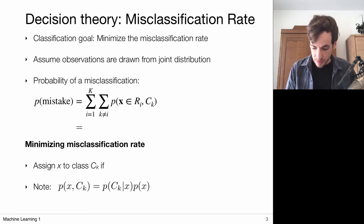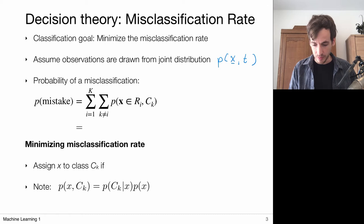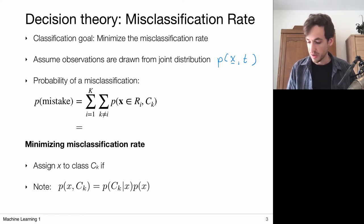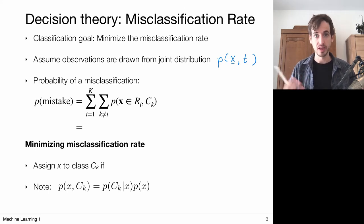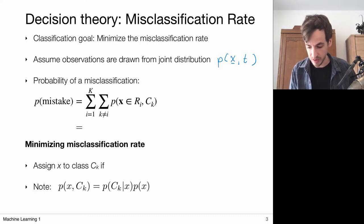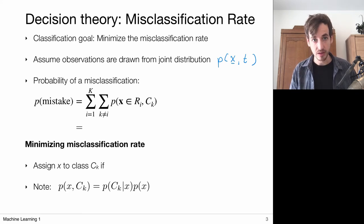I'm going to assume that my data was sampled from some joint probability distribution. In the next slide I'll give a particular example of such a distribution. Essentially it asks: what is the probability of observing a particular input x with its corresponding class? My dataset is generated by sampling from this distribution, so we assume there exists such a joint distribution that describes the data. Then we can talk about the probability of a misclassification.